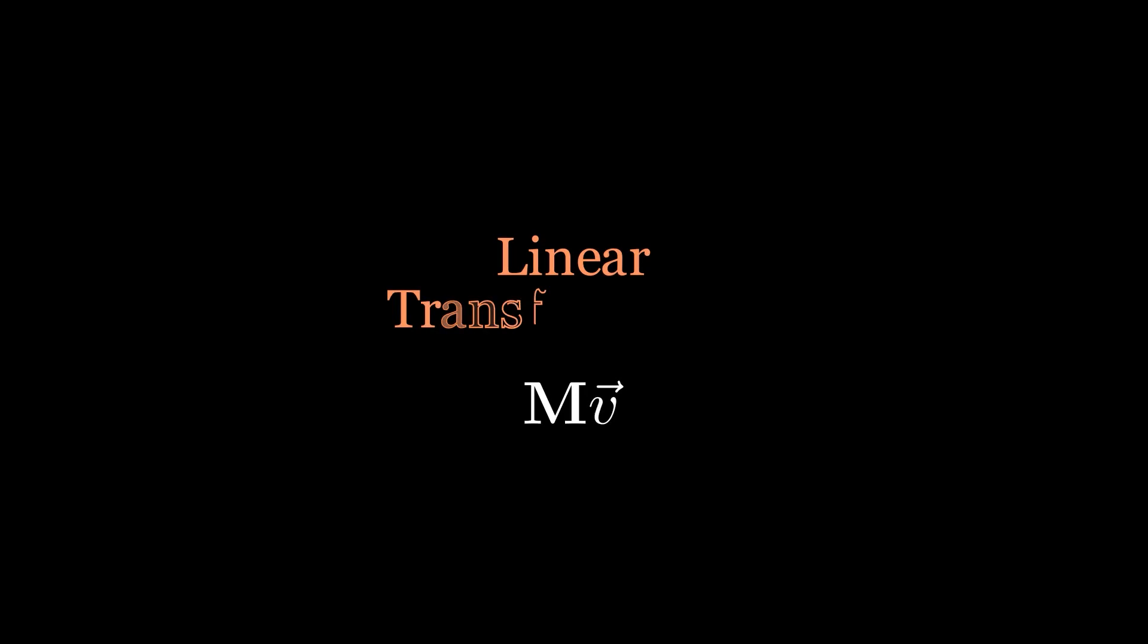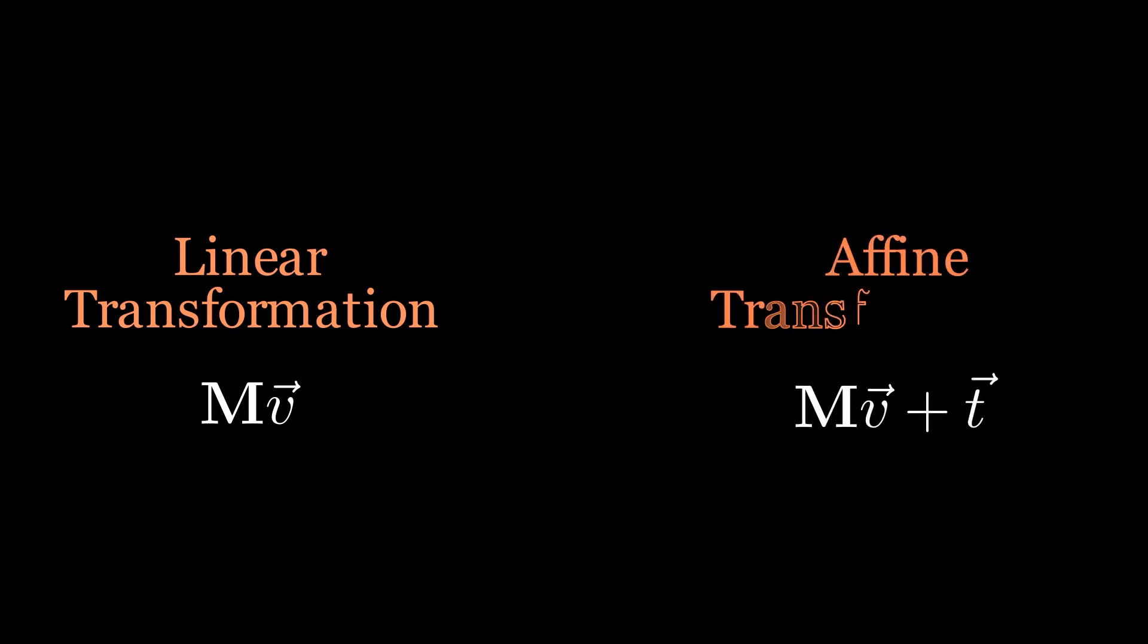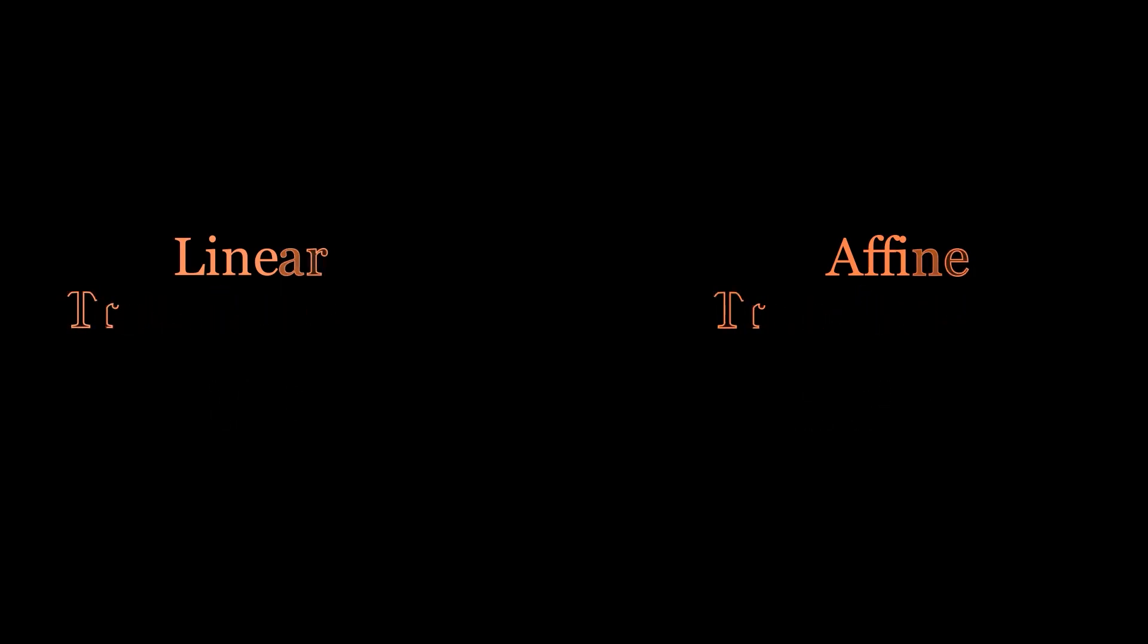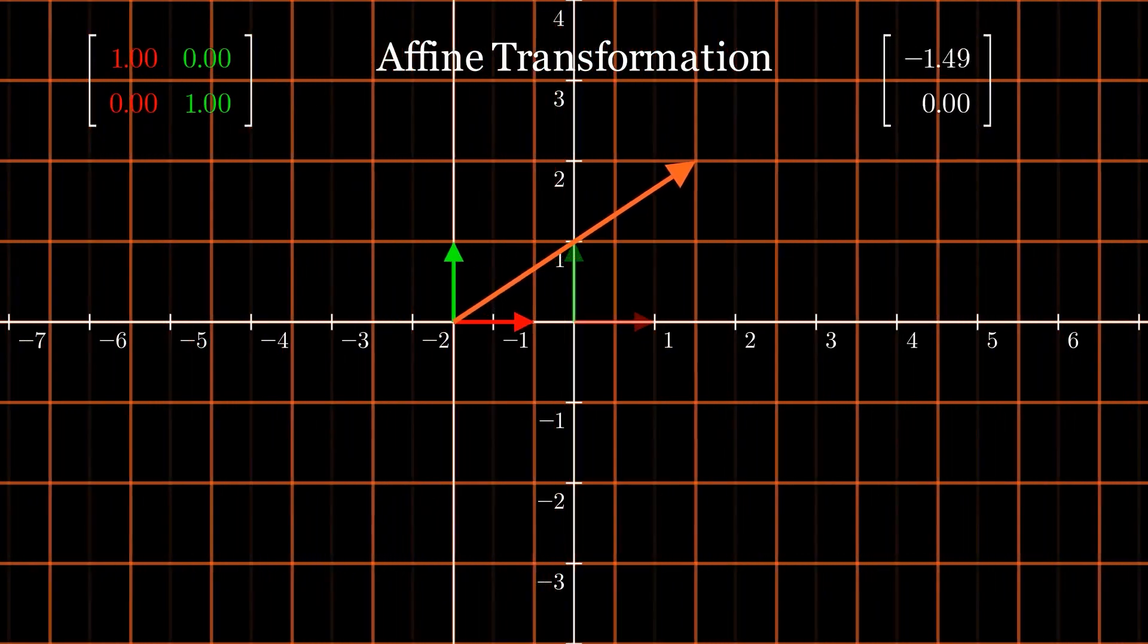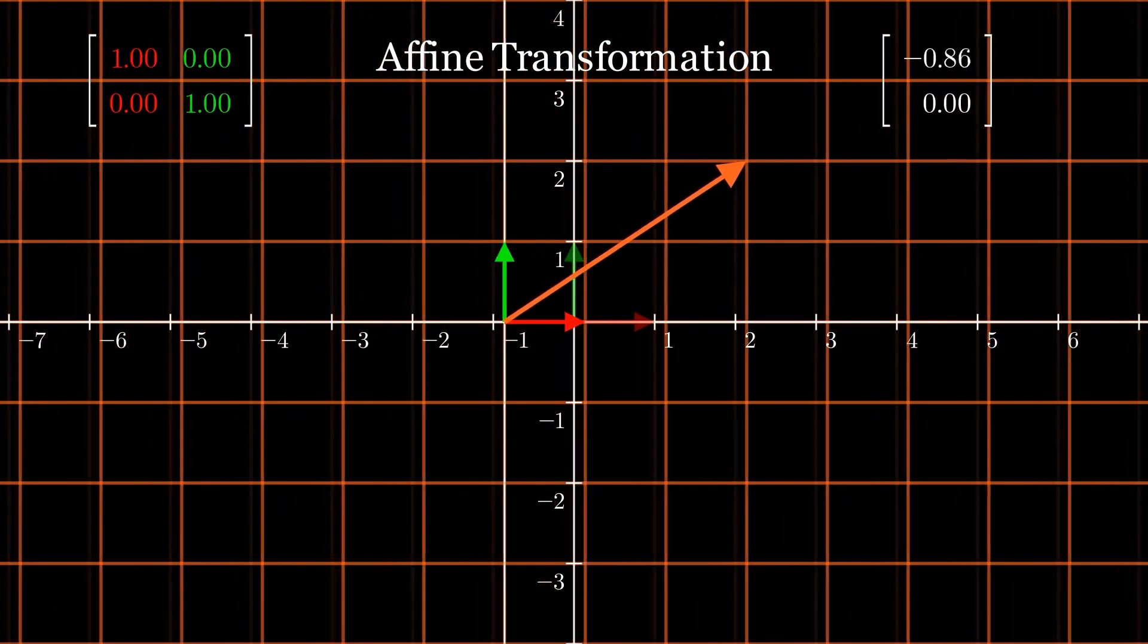Adding a vector to another vector translates it. An extension of linear transformation is affine transformation, which consists of matrix vector multiplication along with addition of another vector. If we add a vector say minus 2 comma 0, it translates the whole plane by two units along the negative x-axis.